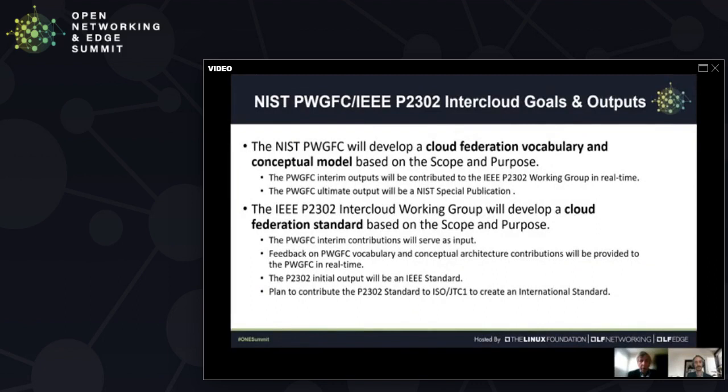Here are the goals. The NIST group will develop a cloud federation vocabulary and conceptual model. This interim output will be contributed to the IEEE P2302 working group in real time, and the ultimate output will be a NIST special publication. The IEEE P2302 working group will develop a cloud federation standard based on the previous scope and purpose. The P2302 initial output will be an IEEE standard with plans to contribute this to the ISO JTC1 to create an international standard around cloud federation.